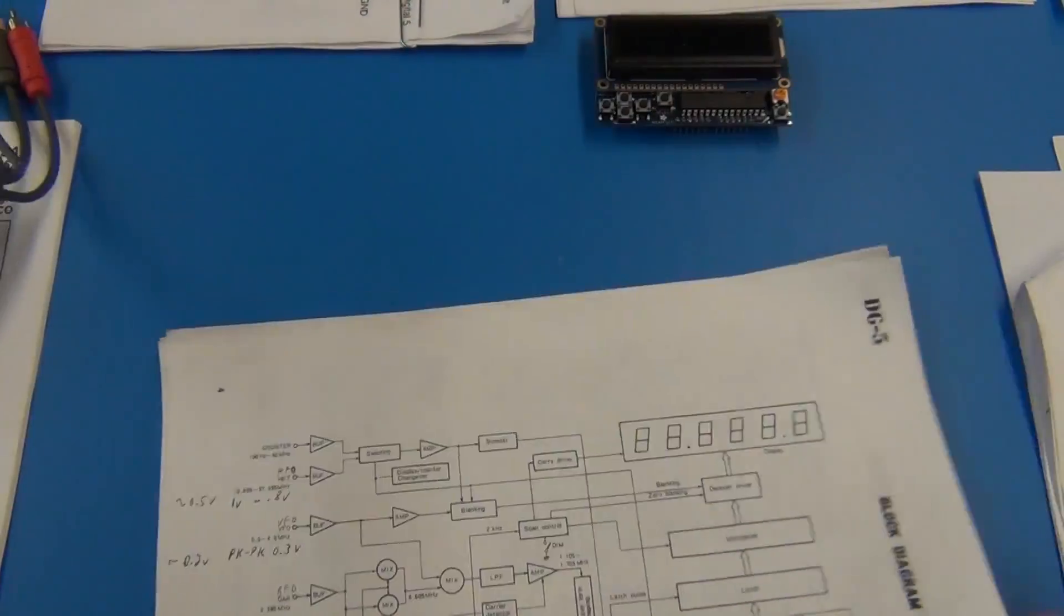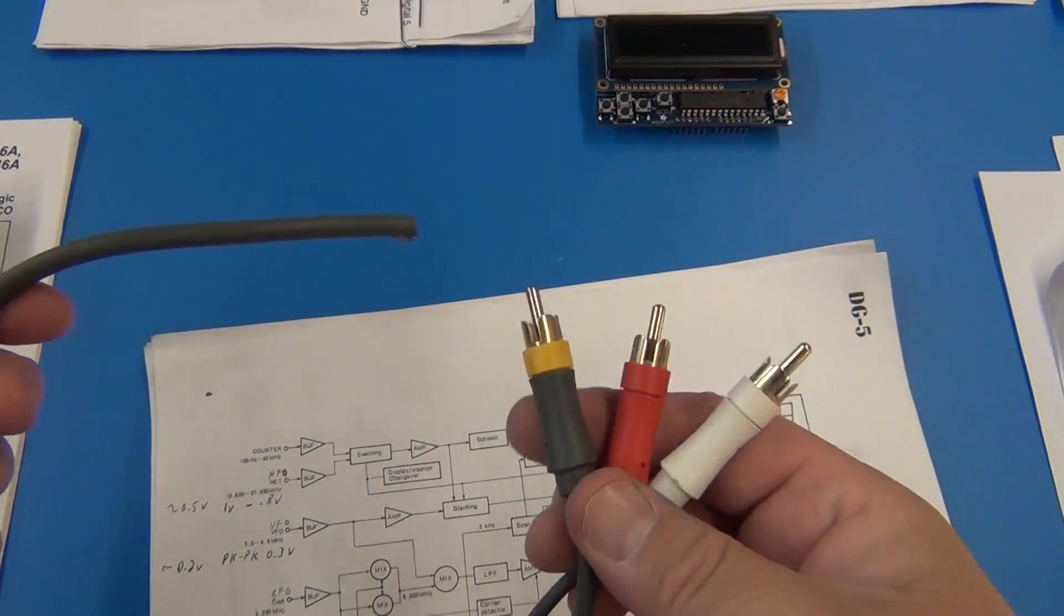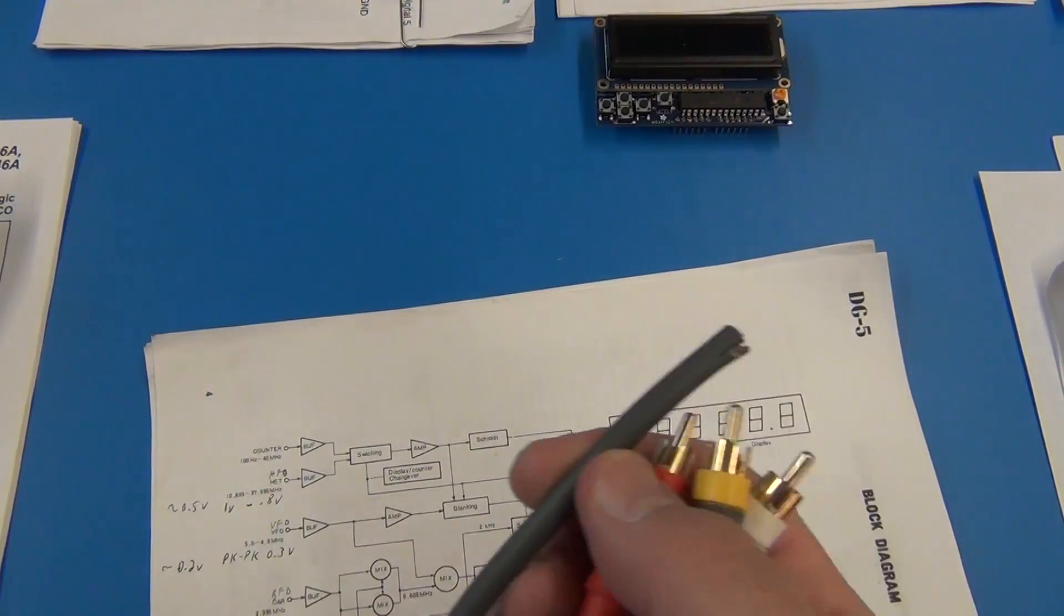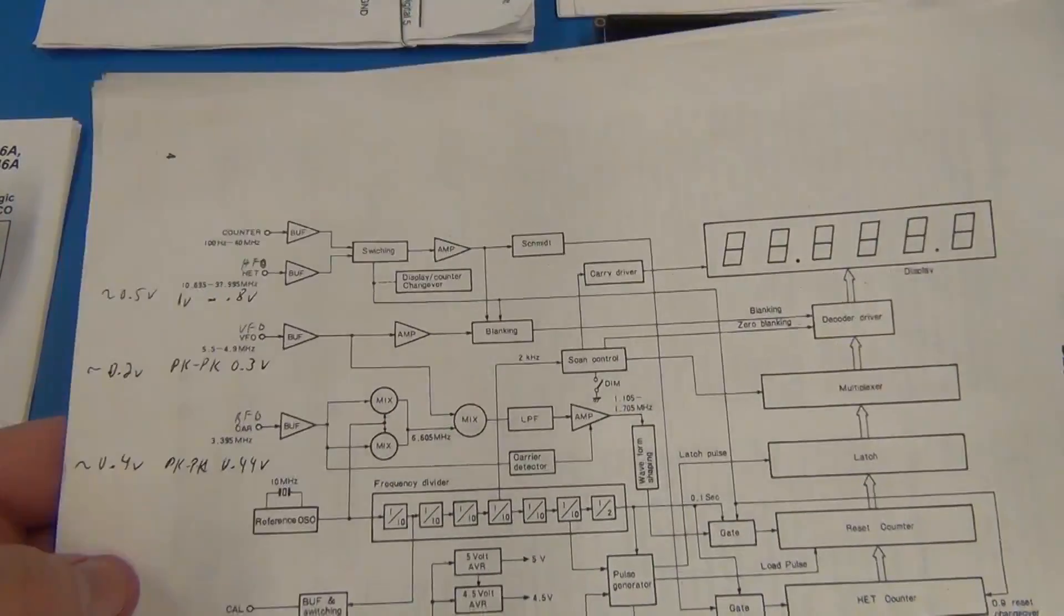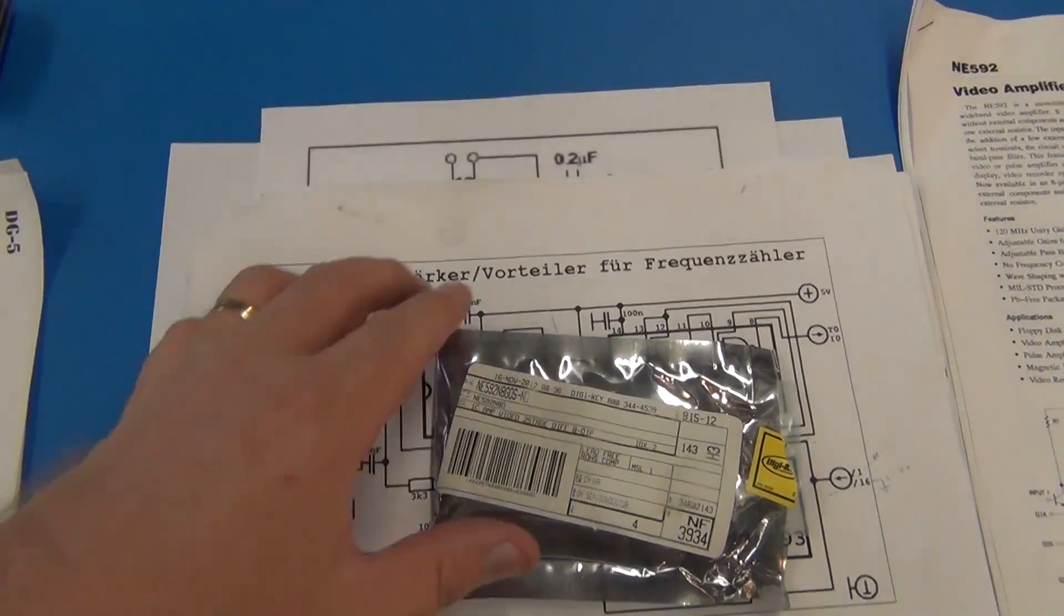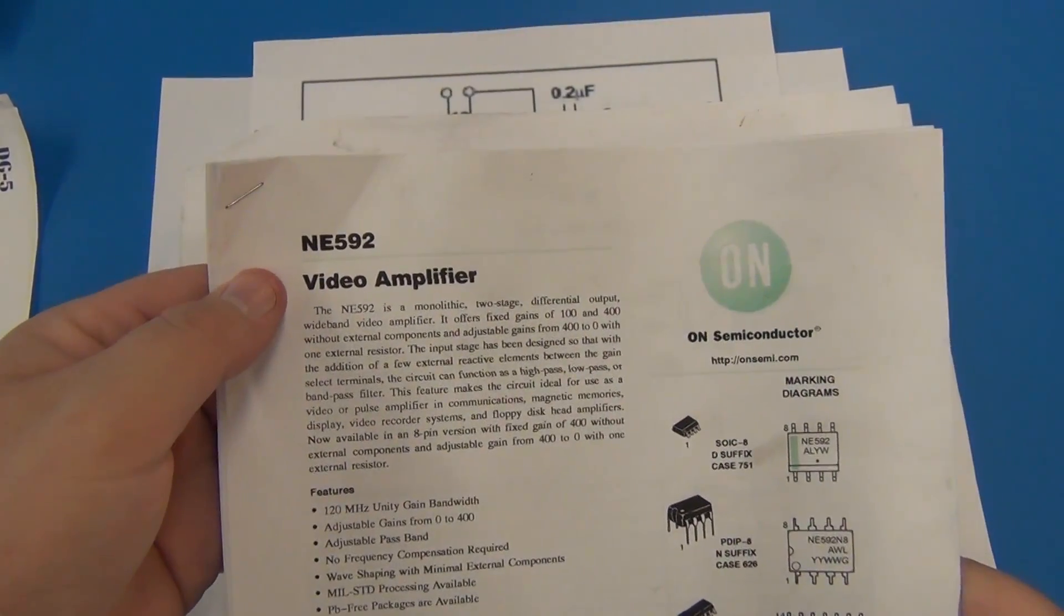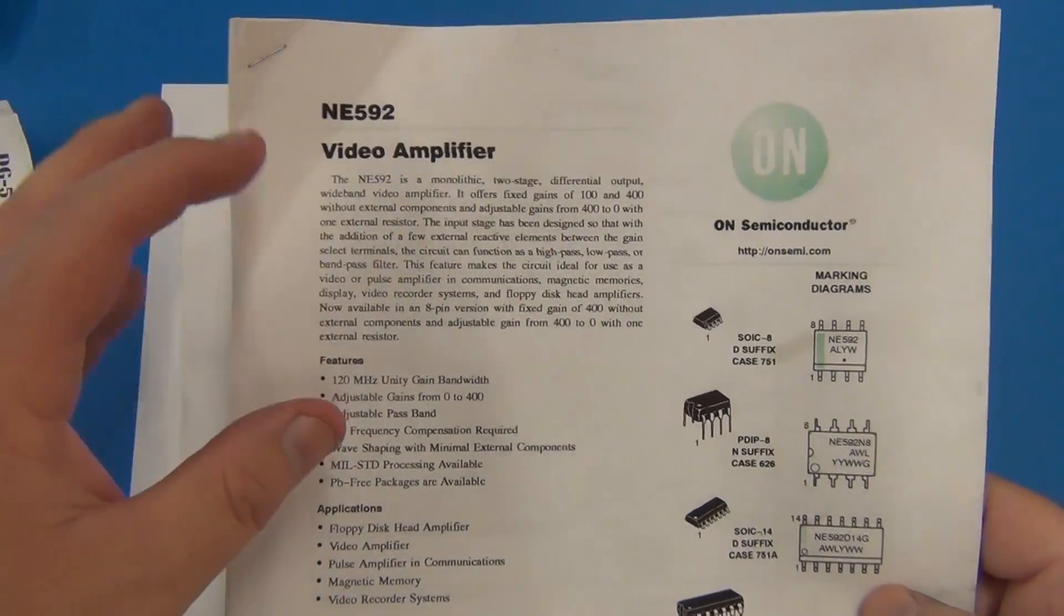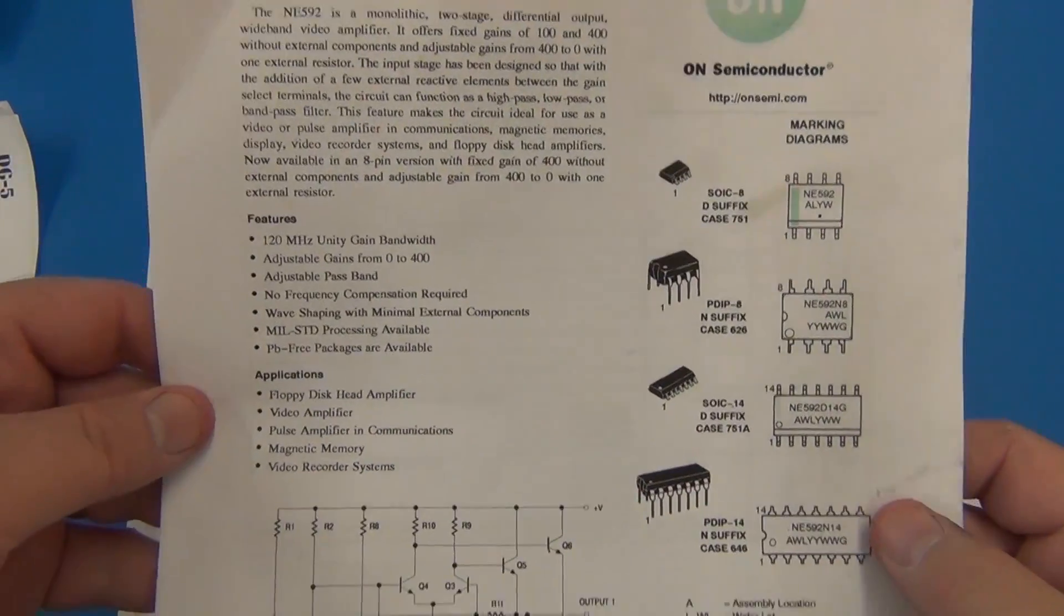And I'll probably feed in, I salvaged this. This will be my three inputs because this is the type of jacks on the back of the radio. And I'll just feed that right in to a board that will have an amplifier. So what are we doing for amplifying? Well, we'll come over to the next one. So I got this chip, the NE592 video amplifier. And it will amplify 40 MHz just fine from small signals.